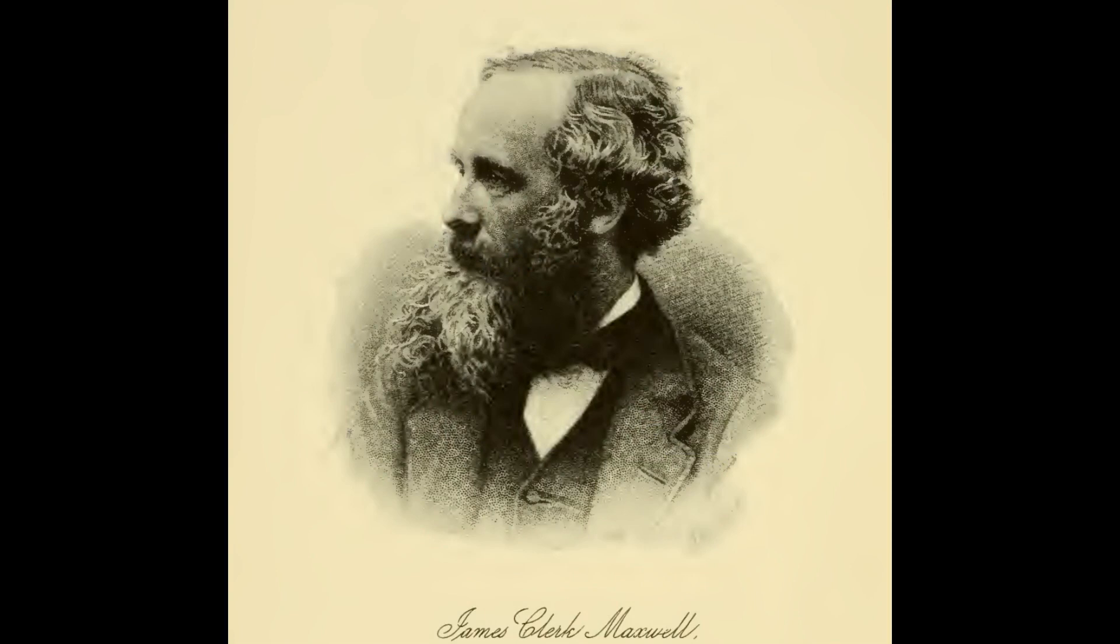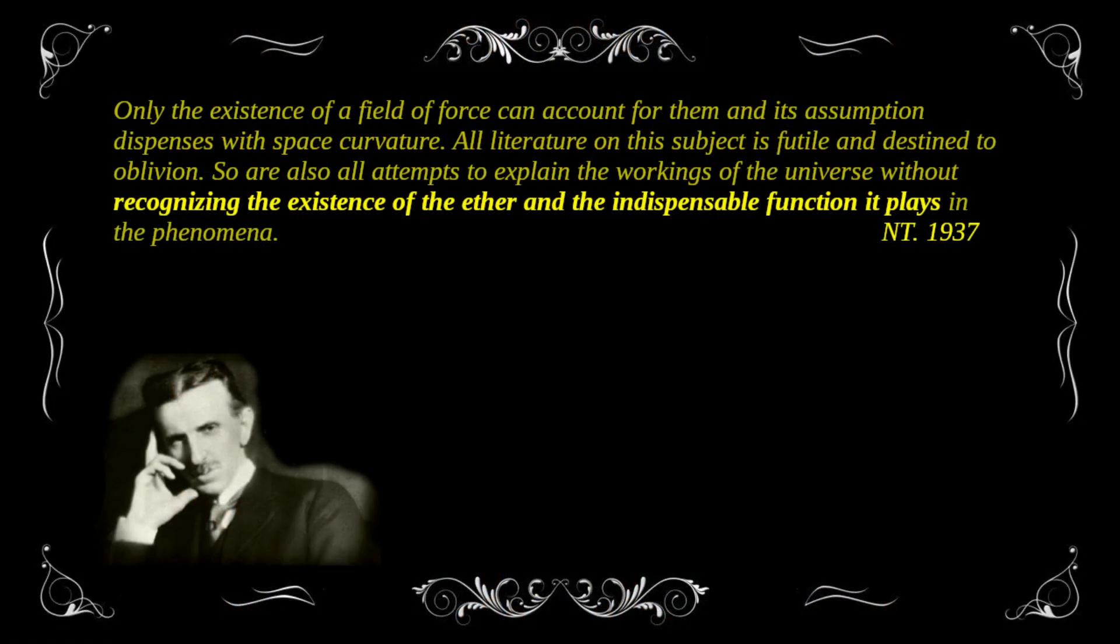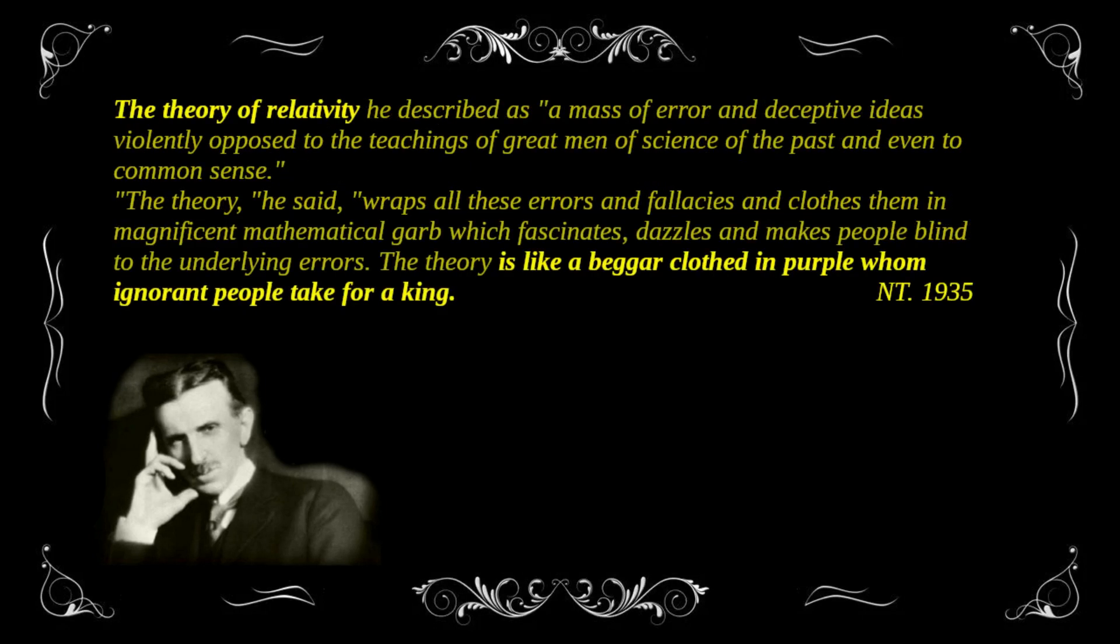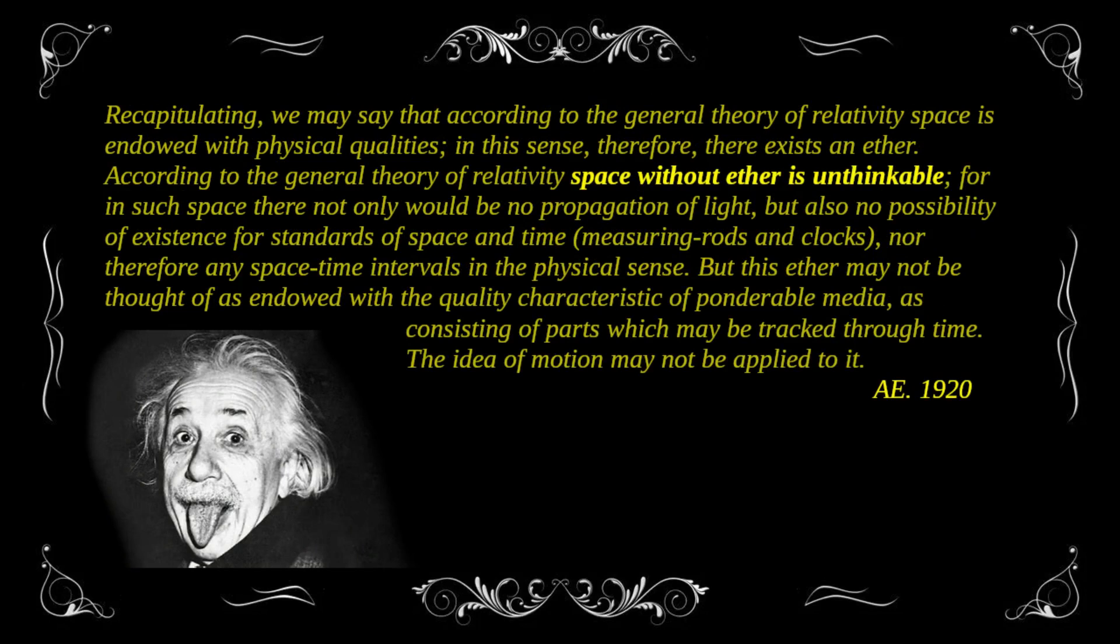Did Maxwell not see this rather obvious error? No, he didn't. Because he derived this equation from his model of the ether. And if you include the ether, then this problem gets resolved. But today's scientists do not want to hear about an ether, because it causes problems with relativity. Even though Einstein said that space without an ether is unthinkable.